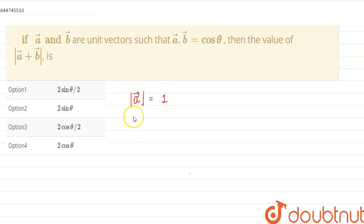This is a unit vector and similarly magnitude of b vector will also be one. And we are given a dot b is cos theta. So now what we can do is we have to find the value of mod of a vector plus